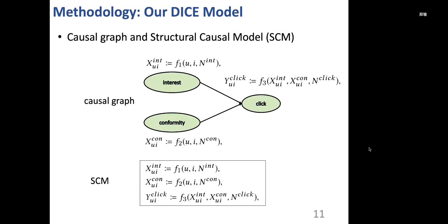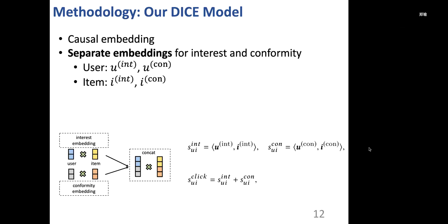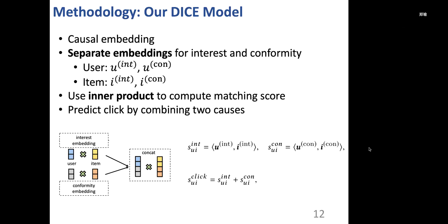We first propose a causal graph and a structural causal model to describe that interest and conformity are two independent causes of a click. To implement the causal graph and the structural causal model, we propose to use separate embeddings for interest and conformity. So for each user and each item, there will be two embeddings, one interest embedding and one conformity embedding. And we use inner product to compute the matching score. And finally, click is predicted by combining the two causes.